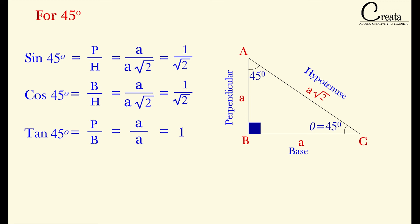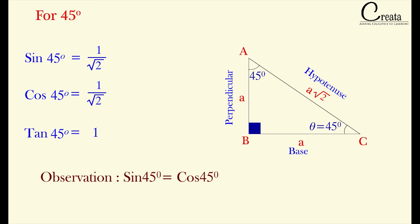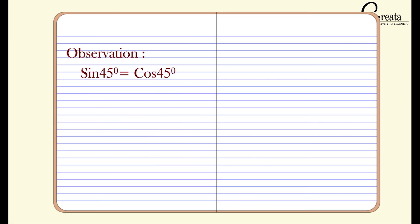So we have calculated trigonometric ratios for 45 degree angle as sine 45 degree as 1 by root 2, cos 45 degree as 1 by root 2, and tan 45 degree as 1. Just a small observation: sine 45 degree and cos 45 degree both are equal. Just note it down, we will come back to this after some time.